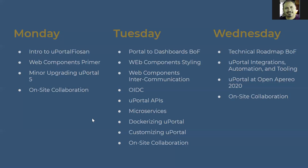We talked about dockerizing uPortal. The advantage is that you know the environment is set up exactly the same way every time — you can tear it down, remove the Docker image, come back, load it back up, and you're in the exact same environment. If it works well in your dev environment, copying that Docker image means you should see hardly any differences in test and production. The downside is that if you need to make one small change, you can't just copy out a JSP or config file — you'd need to build another Docker image.